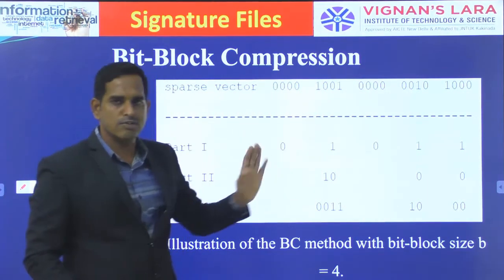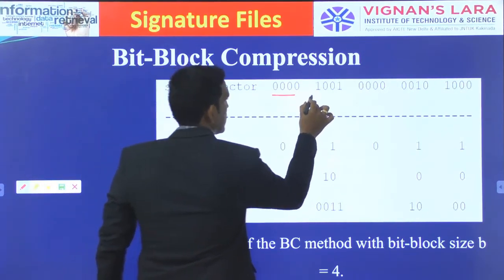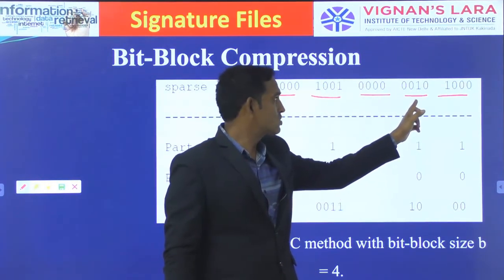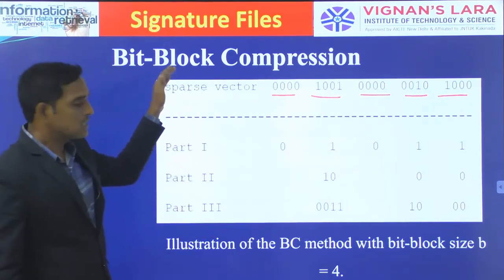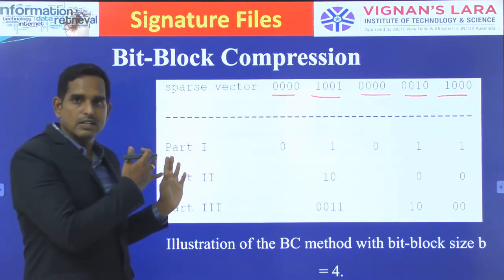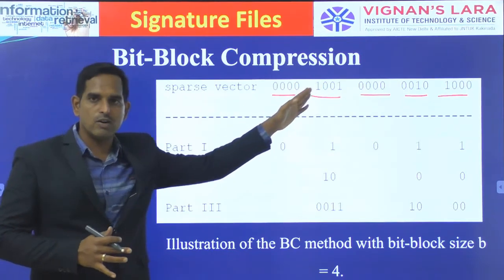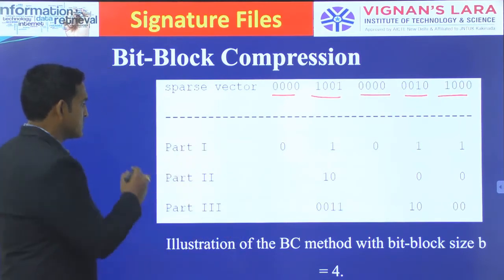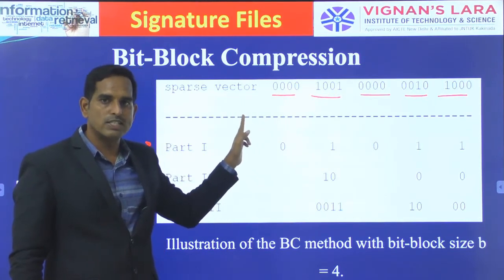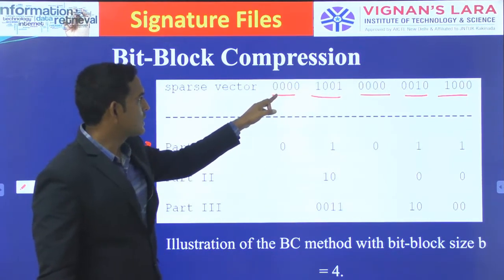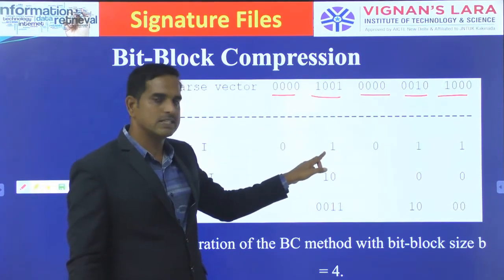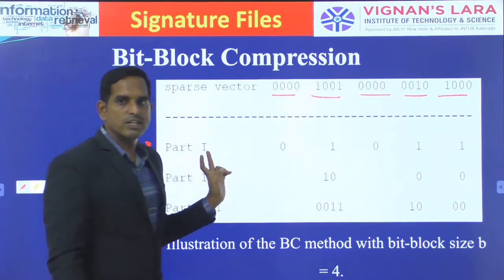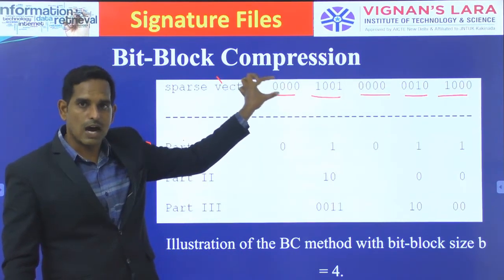Here is the full example. The sparse vector is divided into bit blocks of size 4: [0000], [1011], [0000], [0010], [1000]. For Part 1: we check each bit block for ones — 0, 1, 0, 1, 1. For Part 2: no ones in block 1 so nothing; block 2 has 2 ones so S=2, Part 2 is 10; block 4 has 1 one so S=1, Part 2 is 00; block 5 has 1 one so Part 2 is 00.